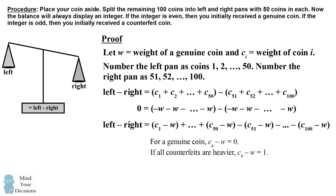If all of the counterfeit coins are heavier, then the weight of a counterfeit coin minus the weight of a genuine coin will equal 1. If instead all of the counterfeits are lighter, then the weight of a counterfeit coin minus the weight of a genuine coin will equal minus 1. We'll consider each of these cases separately.